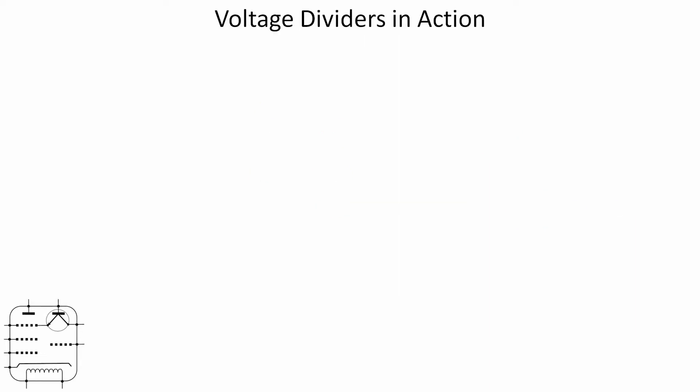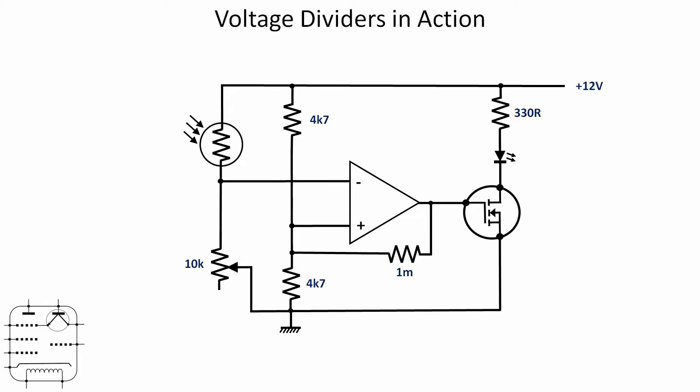I mentioned when we were looking at the breadboard that these things are everywhere, and indeed they are. Here's a circuit which first appeared in video 98, a couple of years back, where I got an op amp and a MOSFET. I've got a light dependent resistor on the top left there, and a MOSFET turning on and off an LED across on the right there. We were effectively creating a light dependent switch, the kind of thing you might find on a lamp post in the street, so the light only turns on when it's dark or at a certain light level.